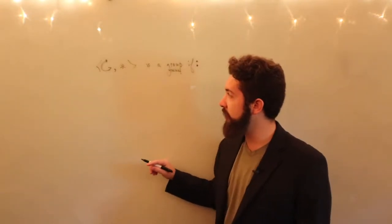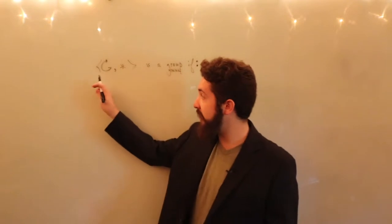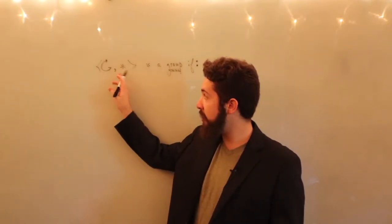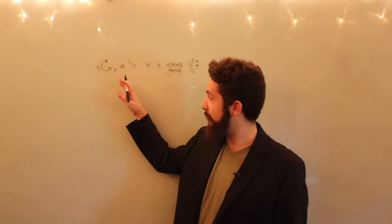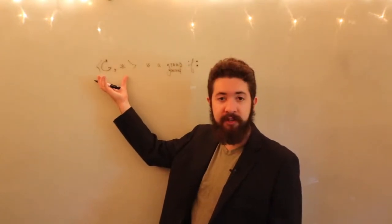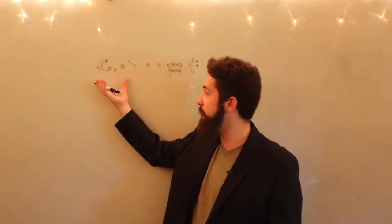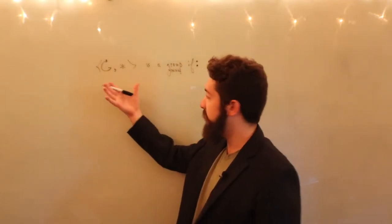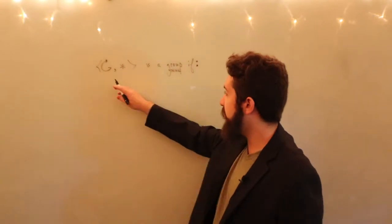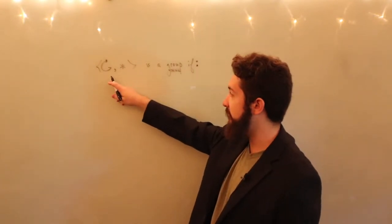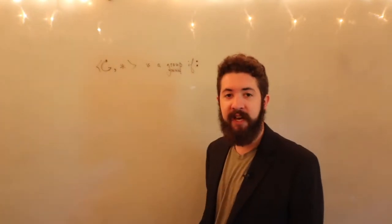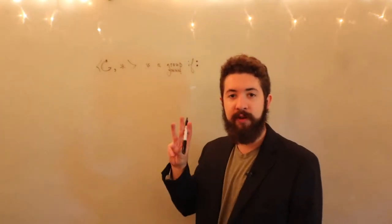I'm going to denote the set G, the binary operation star, and the fact that it's closed under this operation using this notation to consider all that together. We're going to say that this set together with the operation is a group if it satisfies three properties.